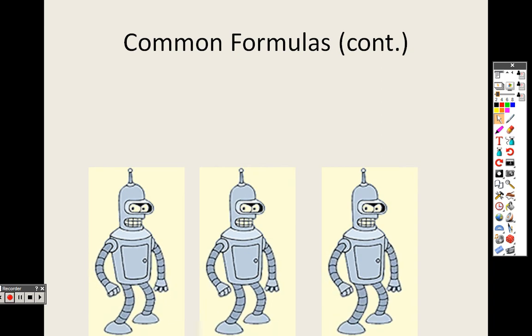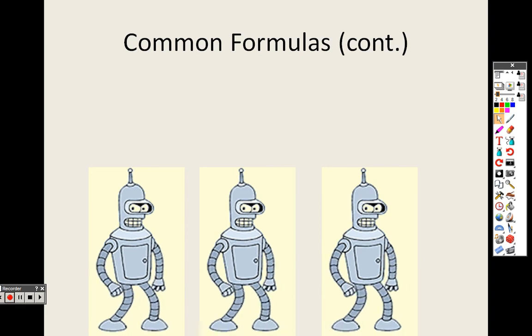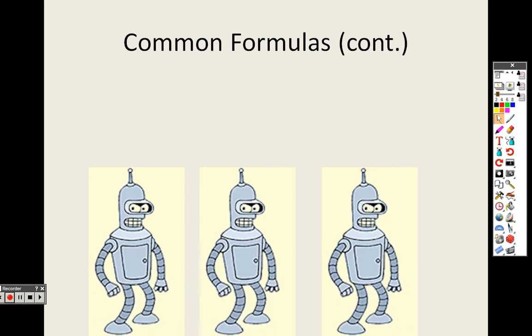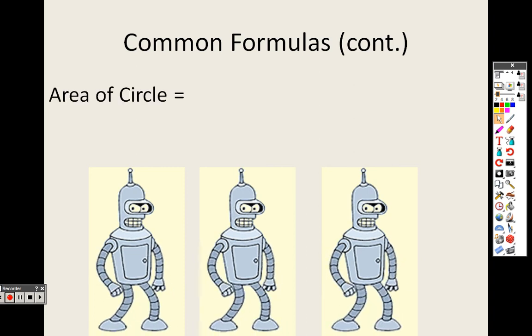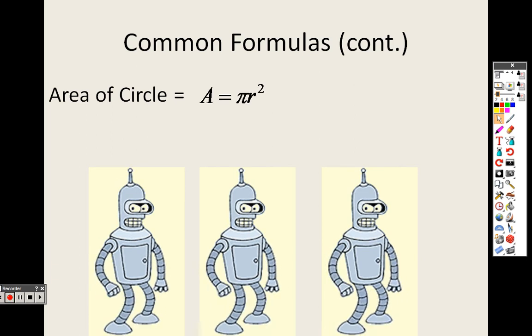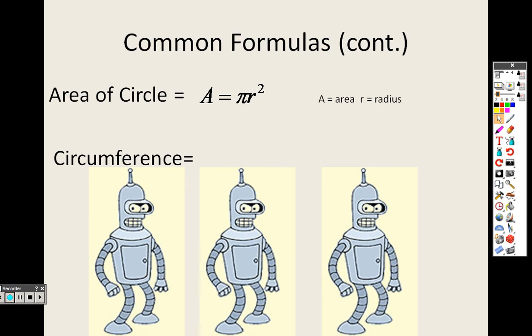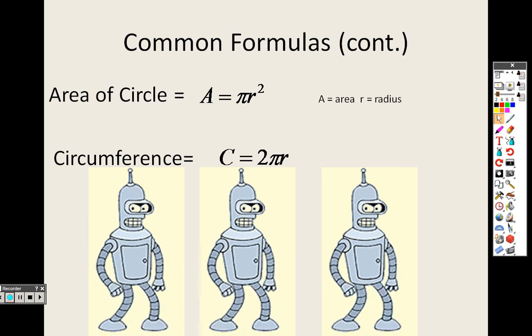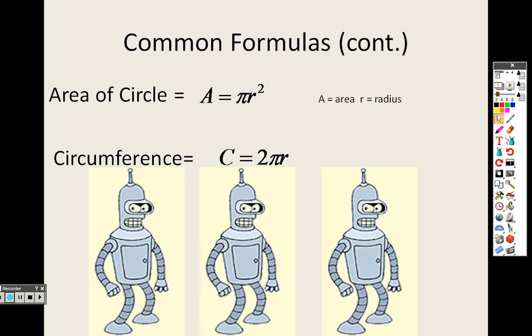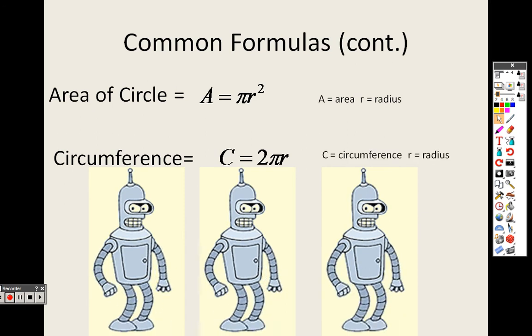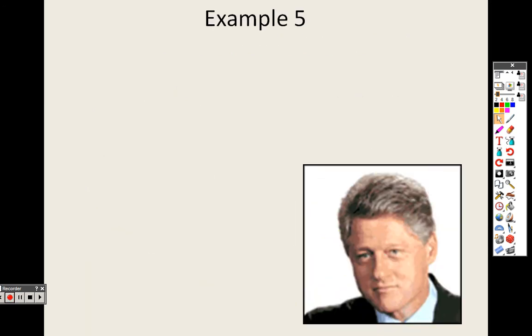Some more common formulas here for 1.4. We went over a bunch of them at the end of the last one. Let's do some more here. We have the area of a circle. That's pi r squared. You should know that one, where r stands for the radius. And circumference is pi times the diameter, or you can do 2 pi r, and r stands for radius and c stands for circumference.